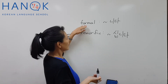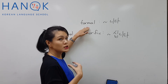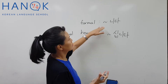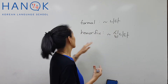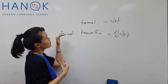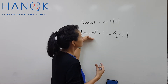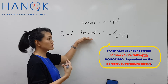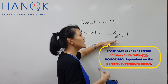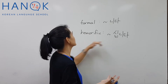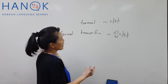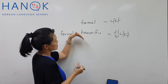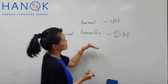Just to recap: formal speech is about who you are talking to. So if it's a formal setting and you're talking to your boss, you will use 니다. And in a formal setting, honorific is about who you're talking about. So let's say I'm talking about my grandfather in a formal setting with my boss — I would use 할아버지는 매일 수용하십니다. This is the difference between formal and formal honorific.